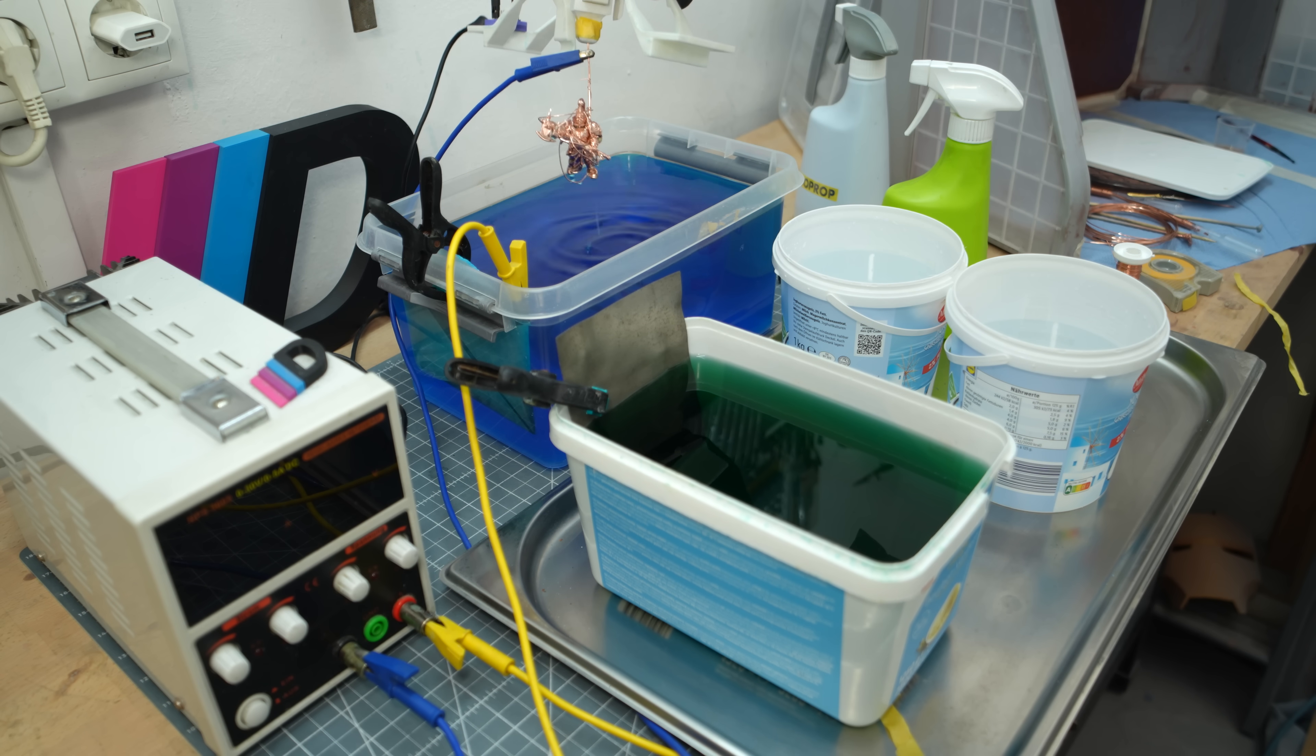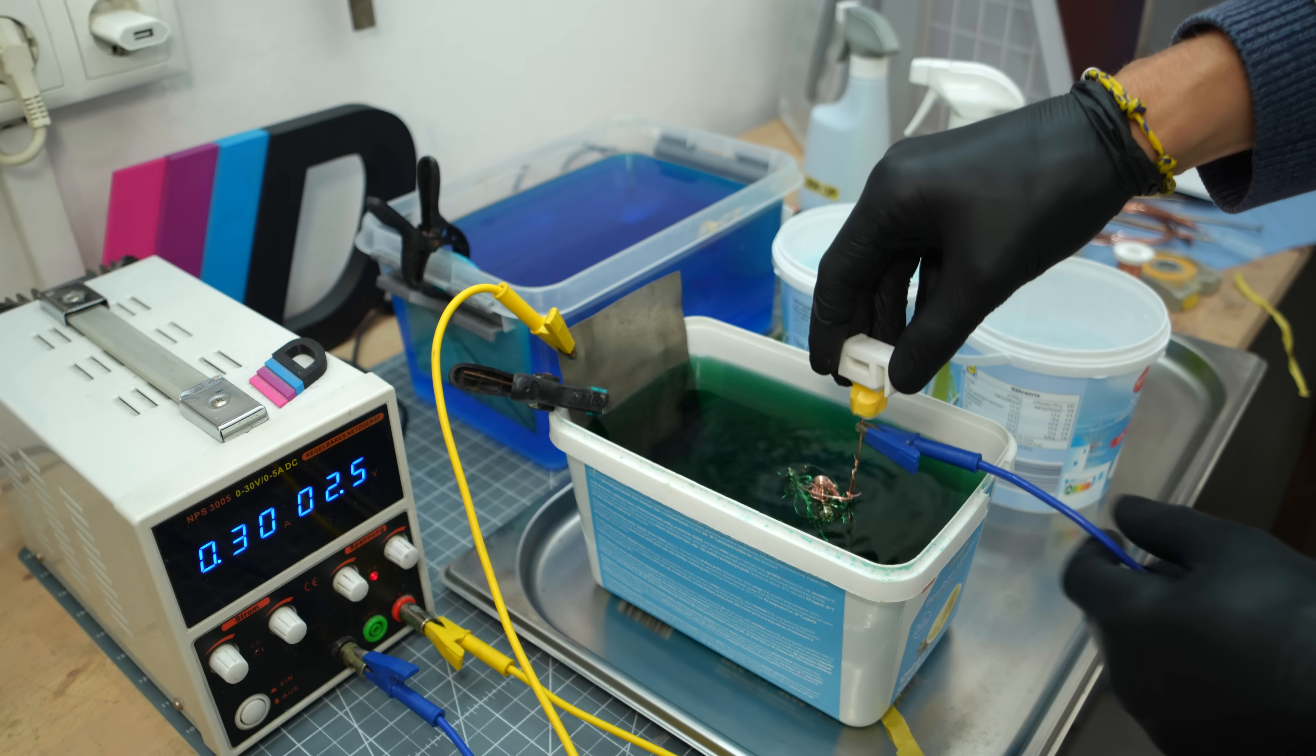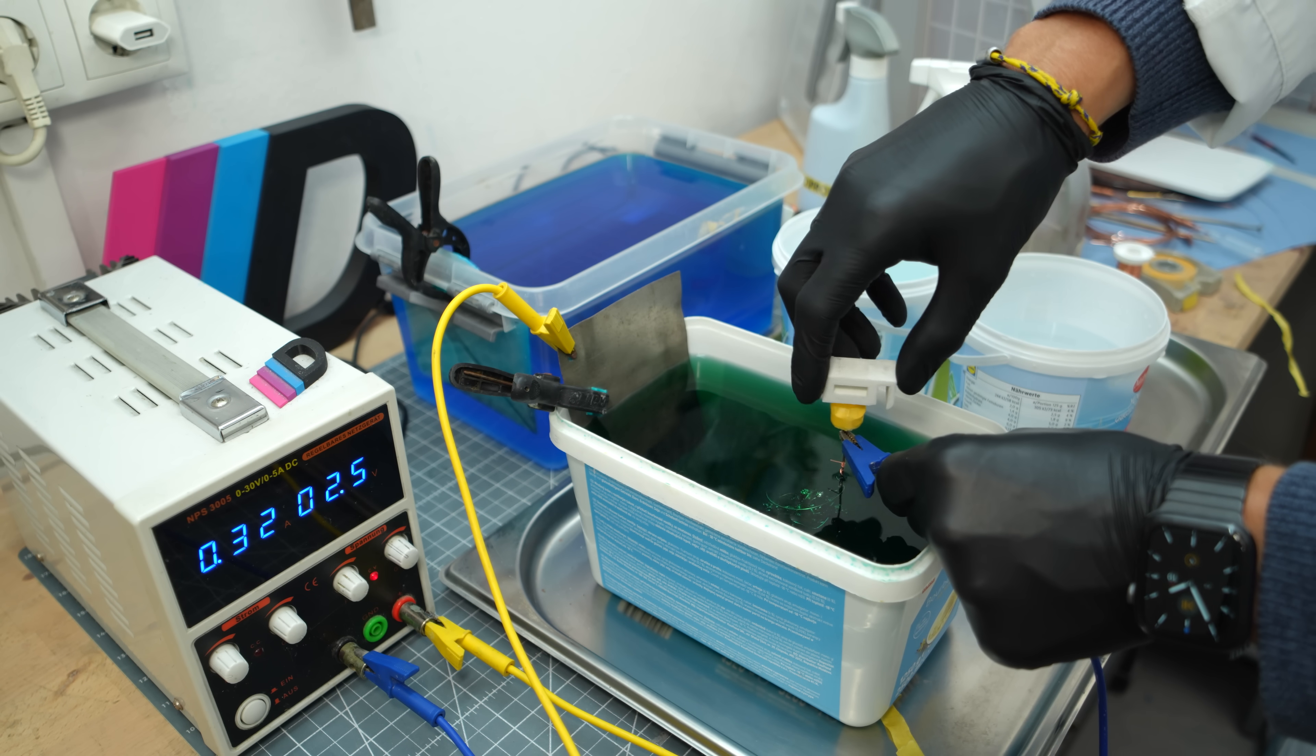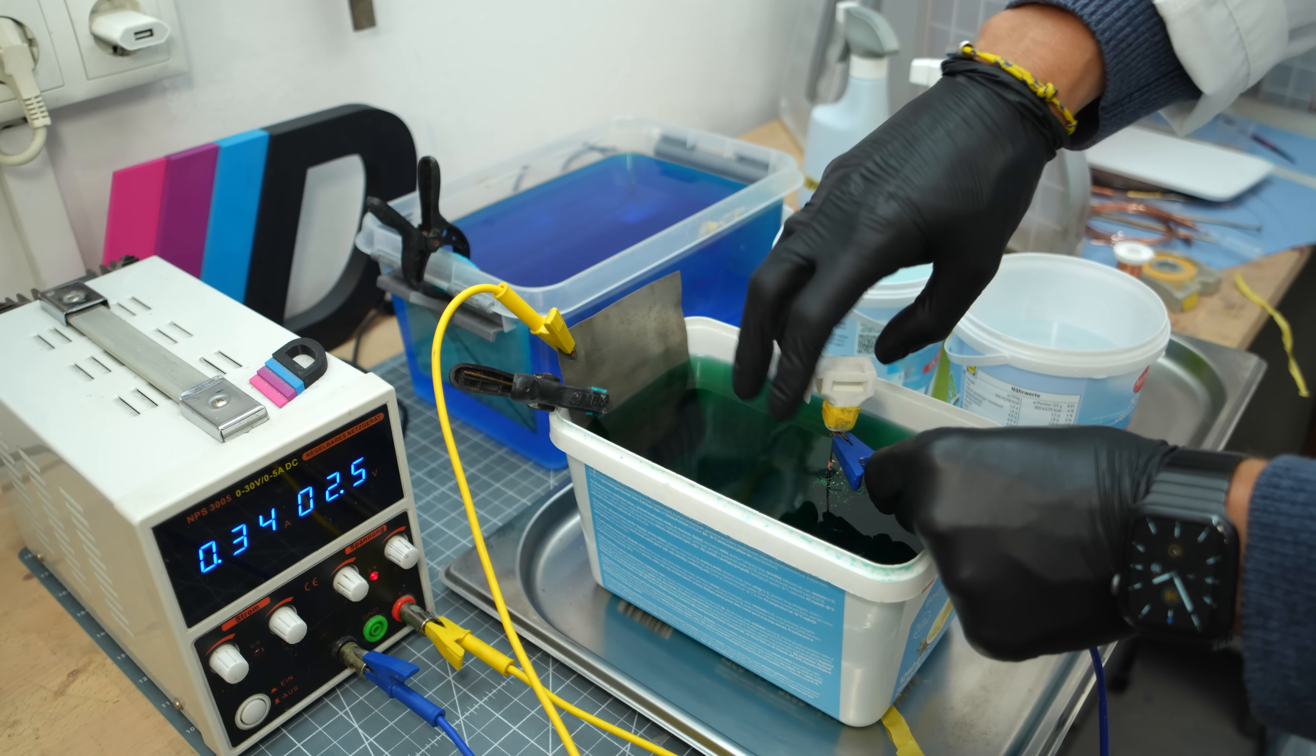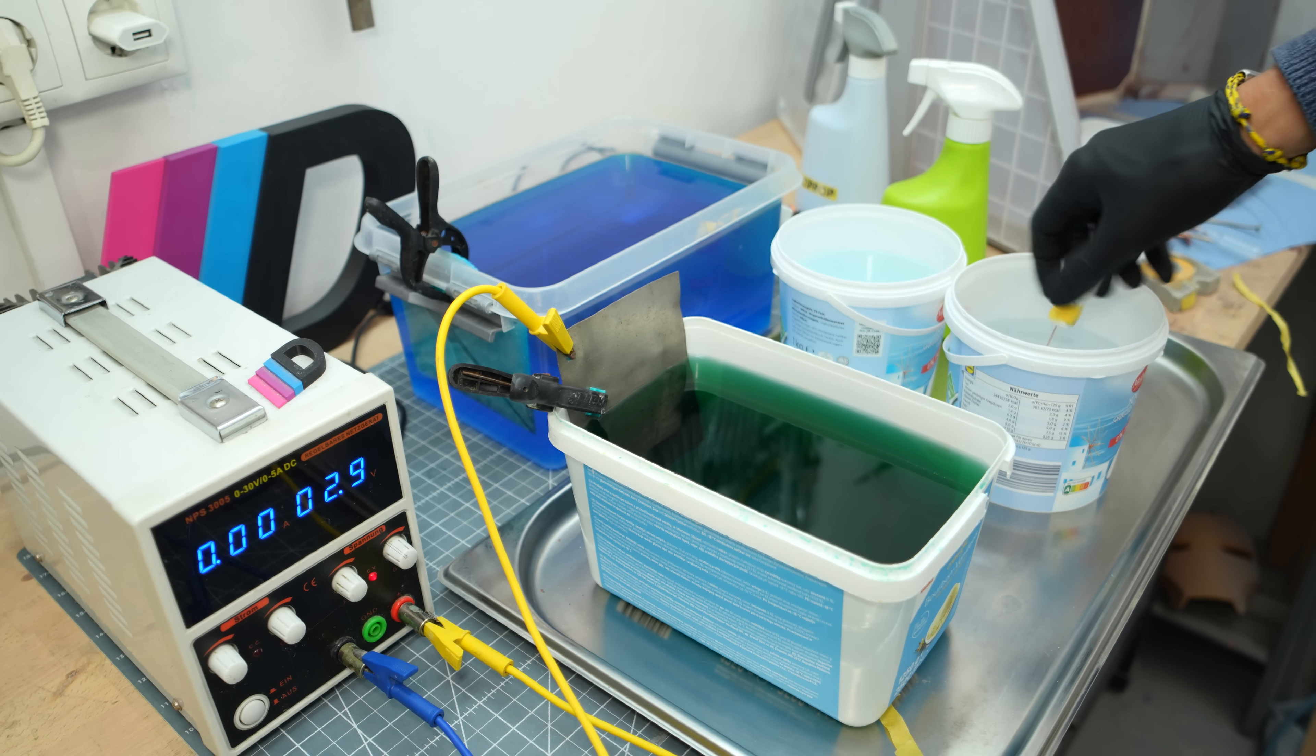Right after copper plating I take the piece and rinse it in distilled water to prepare it optimally. Now I dip it into the nickel electrolyte and rotate it for about 2 minutes. The nickel deposits quickly and afterwards I rinse again in distilled water. As I said, an alternative here is palladium which is much nicer.